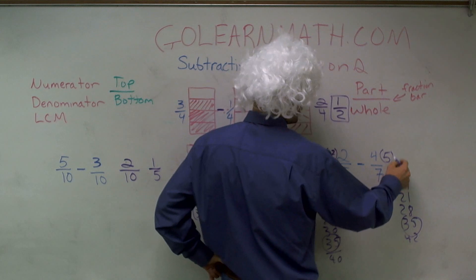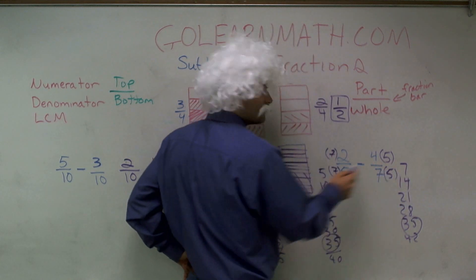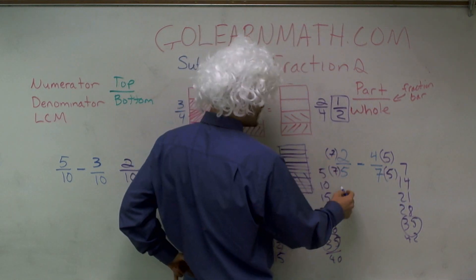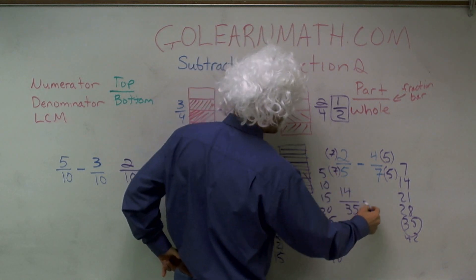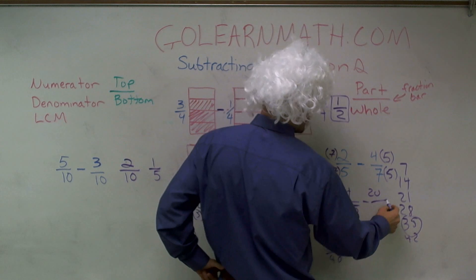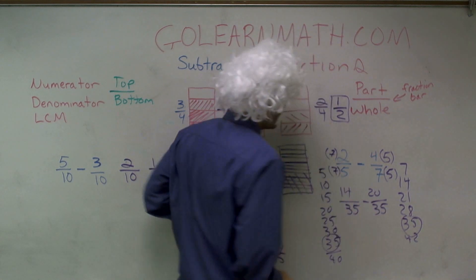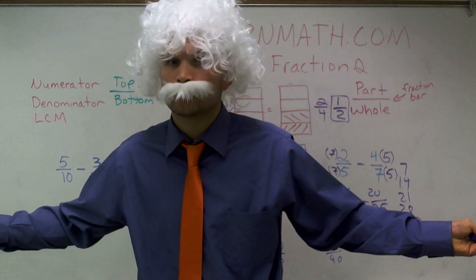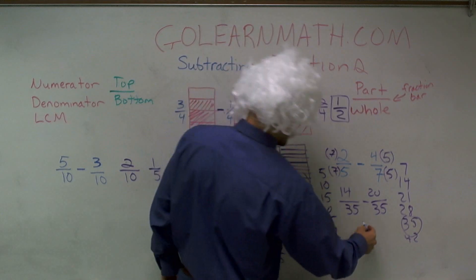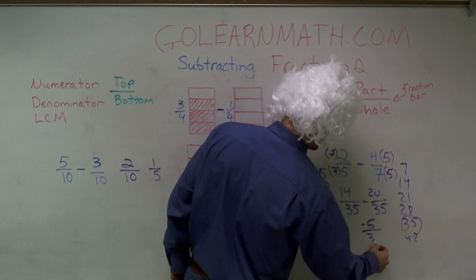And here, to get this to be 35 on the bottom, I need to multiply 7 times 5. 7 times 2 is 14, over 7 times 5 is 35, minus 4 times 5 is 20, over 35. So therefore, if I have 14 parts, and now I give away 20 parts, I have negative 6 over 35.